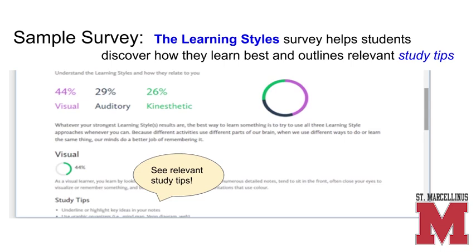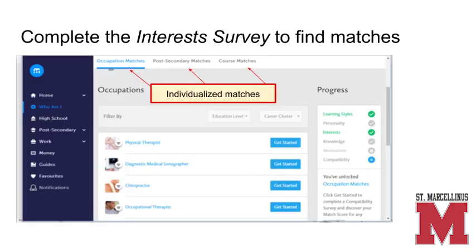One of the surveys in Who Am I deals with a student's learning style. This is an important survey to take each year. One great feature on this page is that students can see study tips for their particular learning style. Another survey in the Who Am I section is the Interest Survey. Once students complete this survey, they will find Matches for Occupations, Postsecondary Programs, and Course Matches.